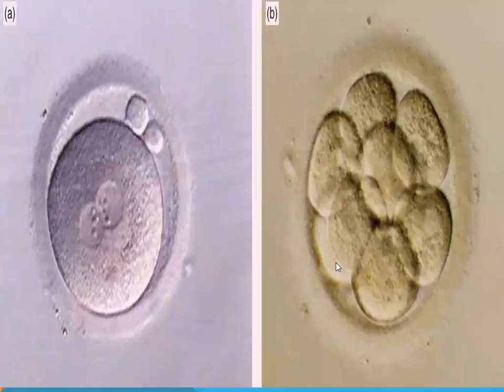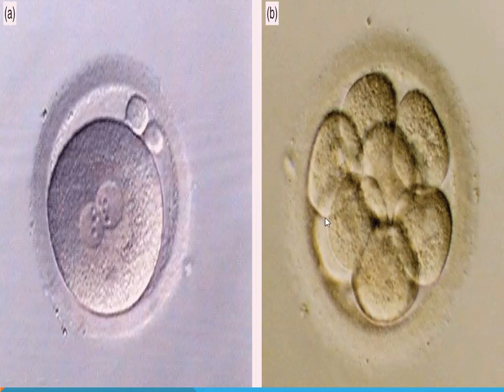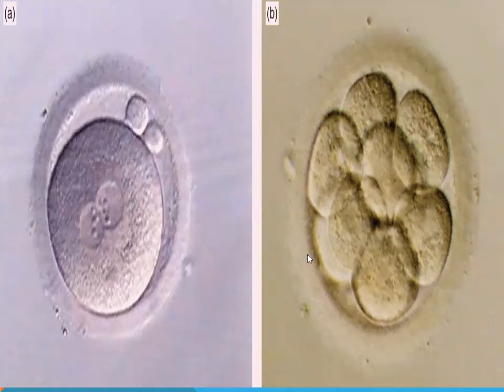There is division in the zygote — these are called blastomeres. The 16-cell stage is referred to as the morula.